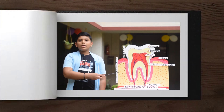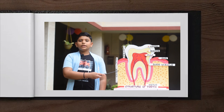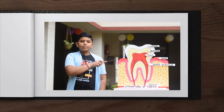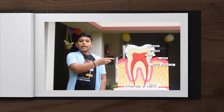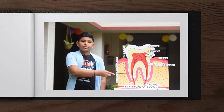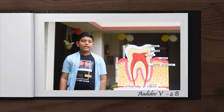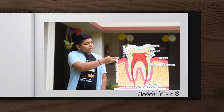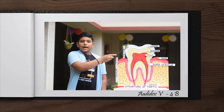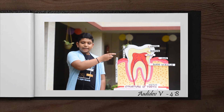This is the model of the structure of a tooth. The tooth is held in place by the gums. A tooth has two parts: the part seen above the gums is the crown, and the part present inside the gums is the root. Each tooth is made up of three layers: enamel, dentine, and pulp. The enamel is the outer layer that covers and protects the crown. It is generally white in color and is the hardest substance in our body.